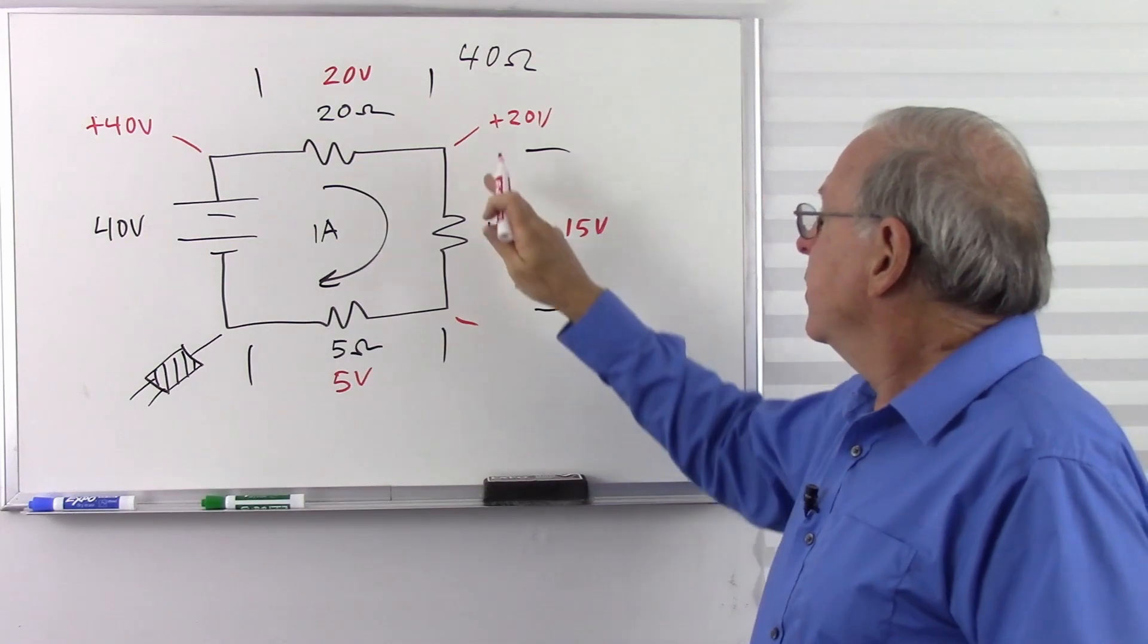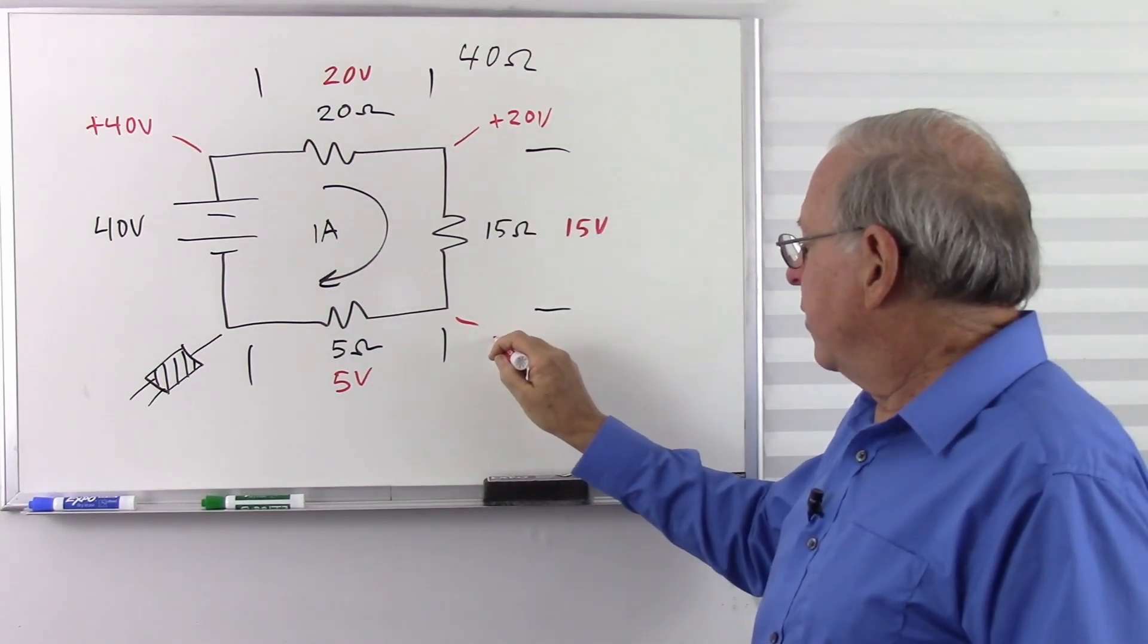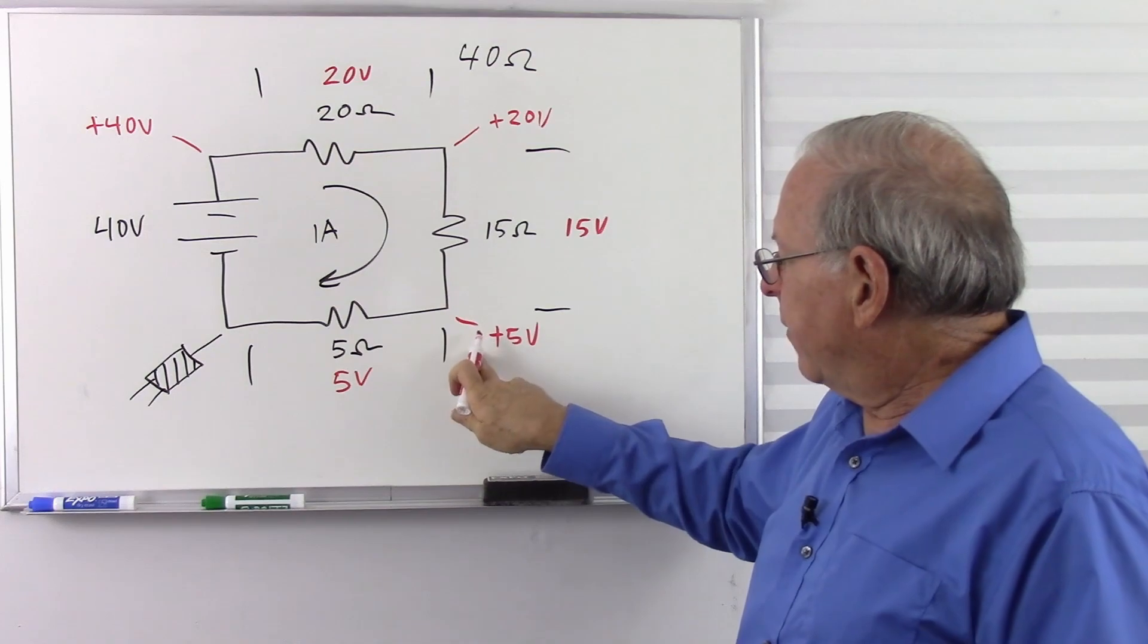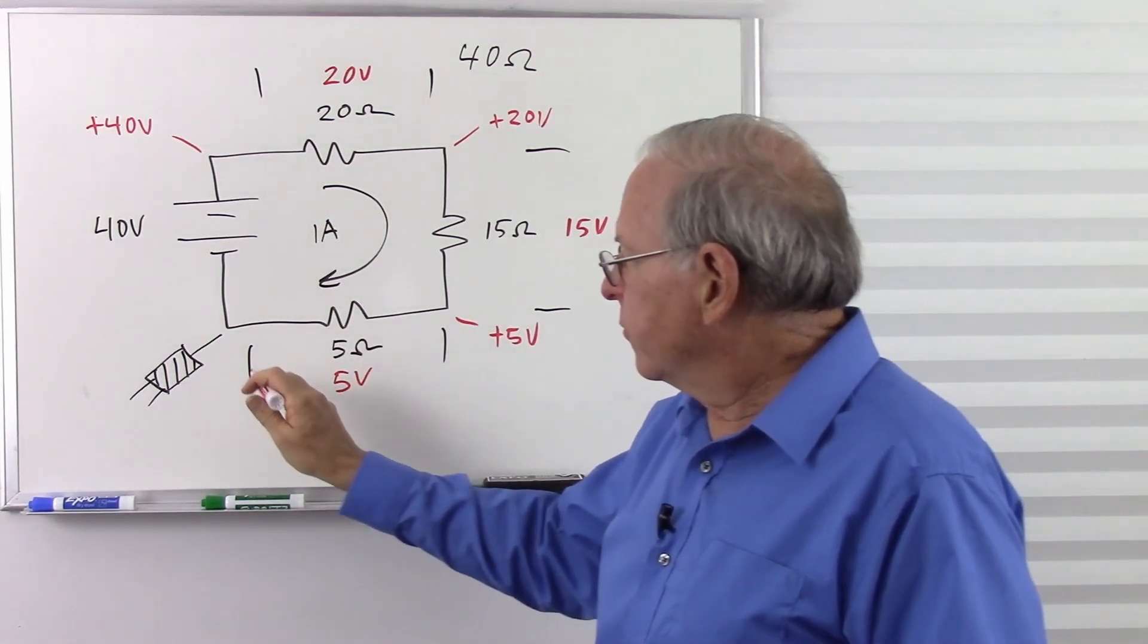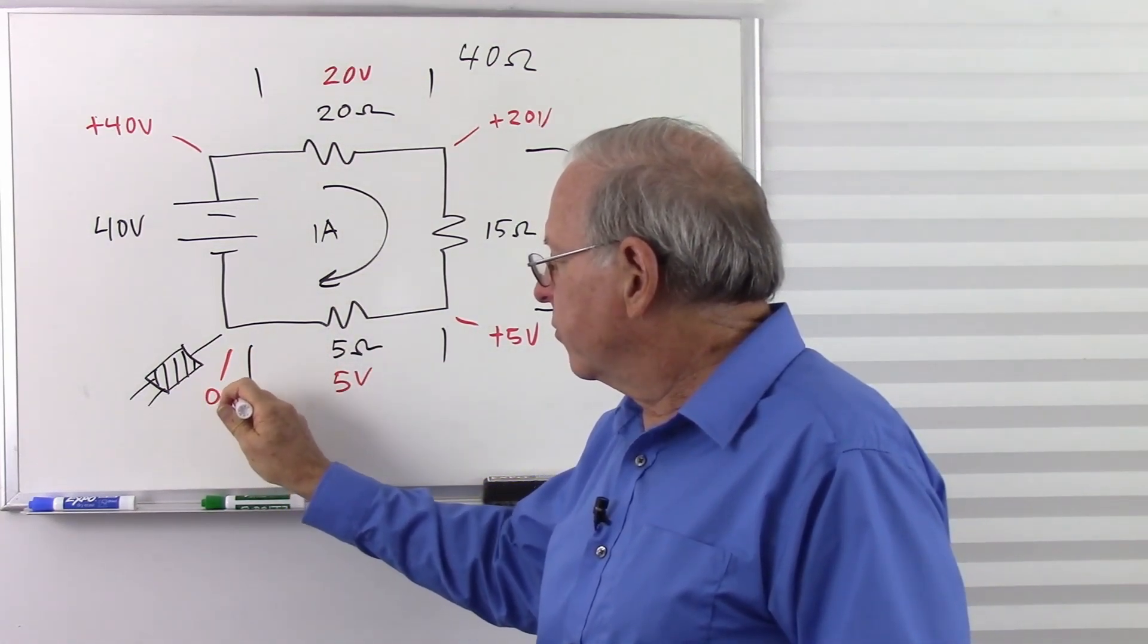Over here, we're going to start with 40, we're going to lose 20, so we have plus 20 volts left over. Over here, we start with 20, we lose 15, so we have plus 5 volts here. And now we have plus 5, we lose that plus 5, and we have 0 volts left here.